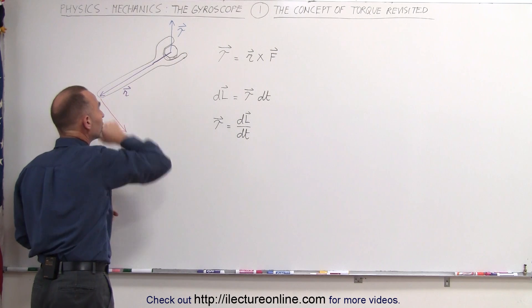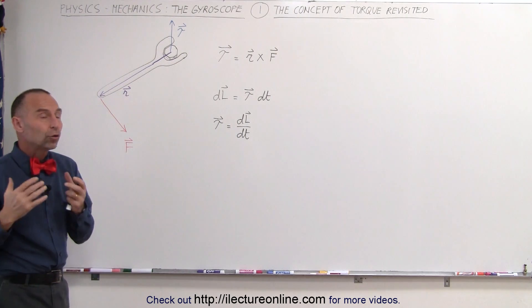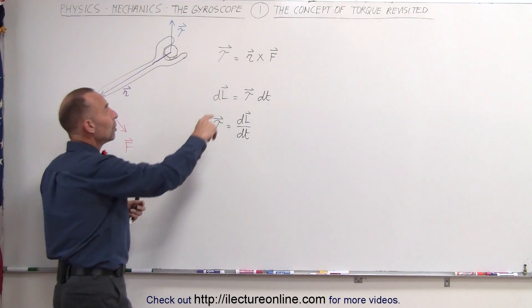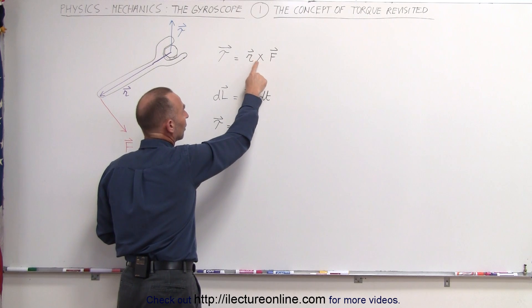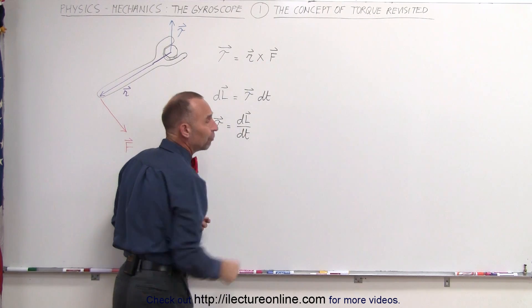That's called the position vector, and then when you want to find the torque, all you have to do is multiply via the cross product the position vector times the force.